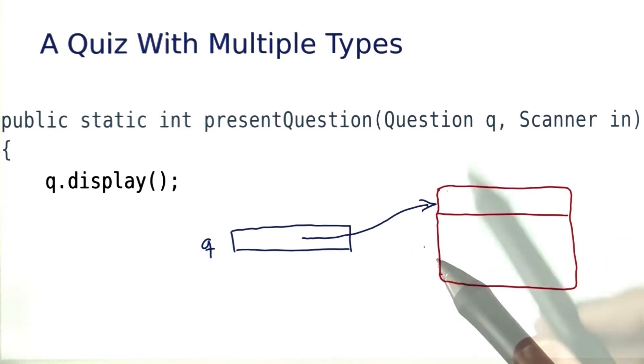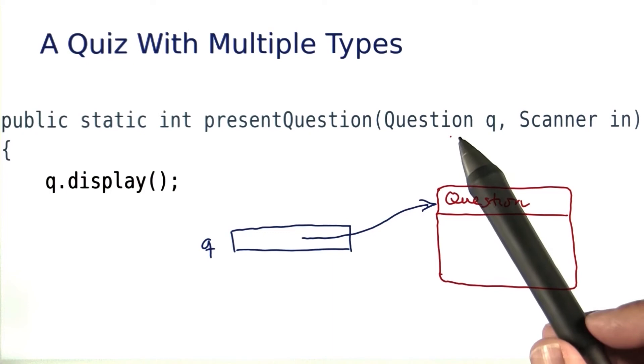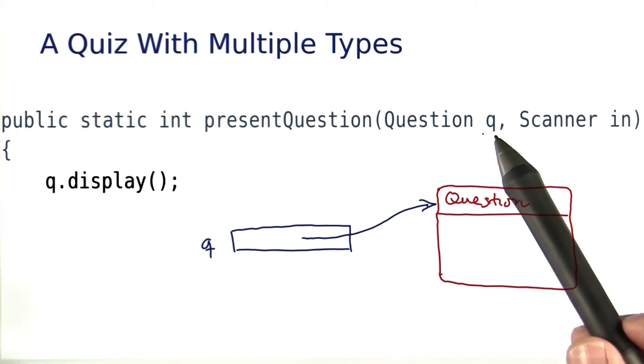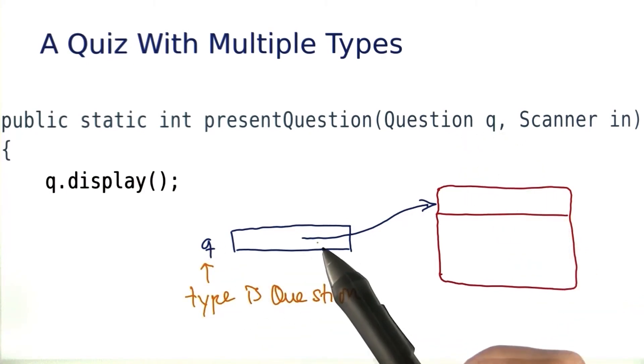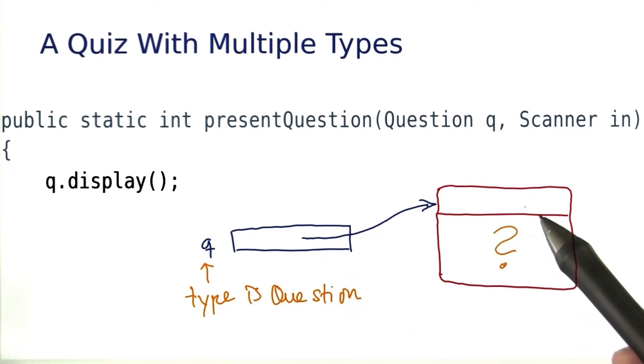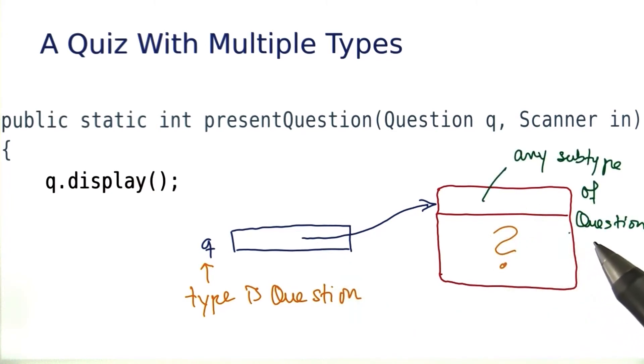An object of what type? Well, you'd think it's Question because that after all is the type of q, but not so fast. The type of q, the variable, is indeed Question. The type of the object is really not known. It could be any subtype of Question.